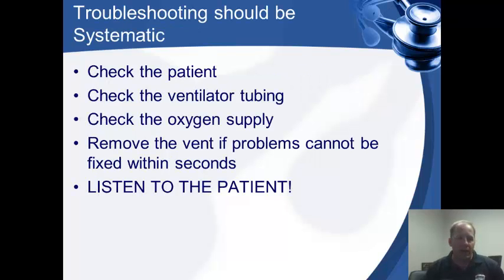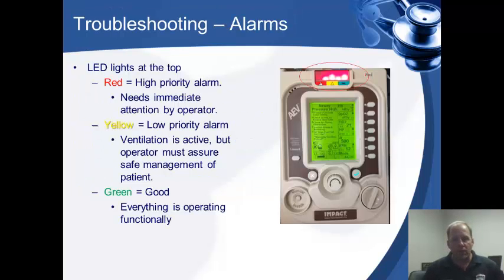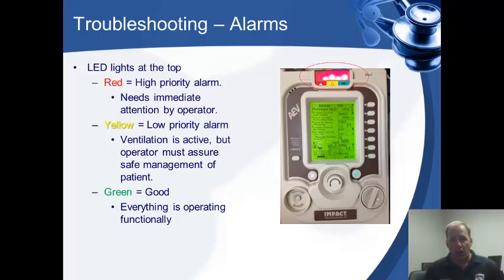Troubleshooting should be systematic. Number one, check your patient. Check the ventilator tubing. Check the oxygen supply. If all else fails, listen to the patient — listen to their lung sounds and make sure the chest is rising and equal bilaterally. If something really serious is going on, you're going to see a red light. React to that immediately. Look at the screen, see what alarm it is. If you see a yellow alarm, your patient is still being ventilated but you need to make adjustments. Green means everything is good. Watch your vital signs.